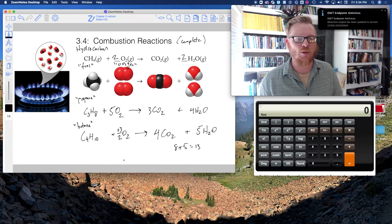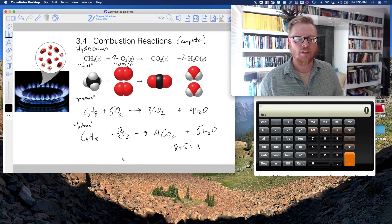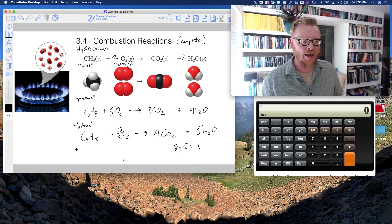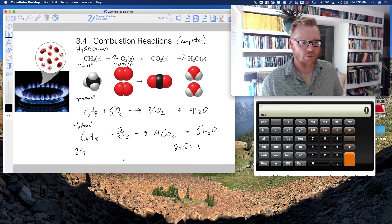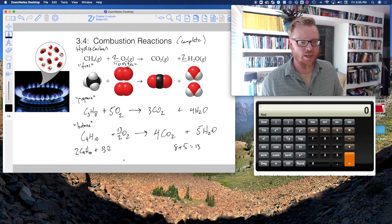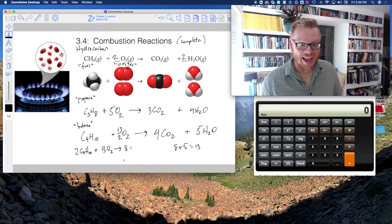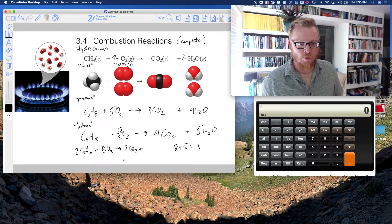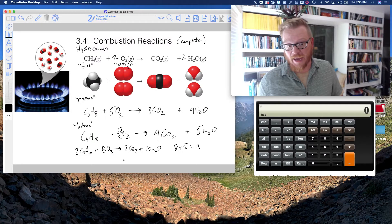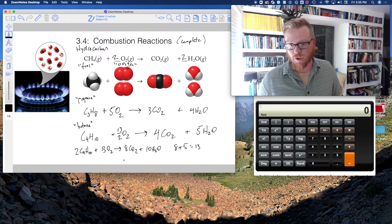Or if I really just hated the way this looks, if I just hated it and couldn't stand it, right? Then I could always say two C4H10 plus 13O2 makes eight CO2 plus 10 H2O. That would be okay too. Either one is fine.